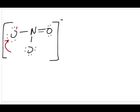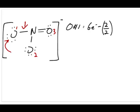Let me label the atoms: oxygen number one, oxygen number two, oxygen number three, and the nitrogen. For oxygen number one, we use the formula: start with the number of valence electrons in a free oxygen atom. Oxygen is in group 6A, so that's six electrons. Then subtract half the number of bonding electrons — oxygen one has one bond, so two electrons in that bond, meaning two divided by two equals one.